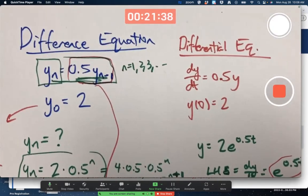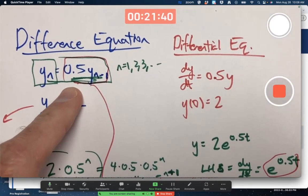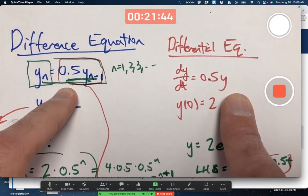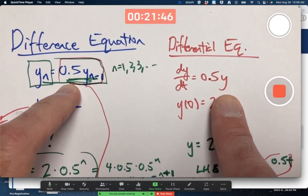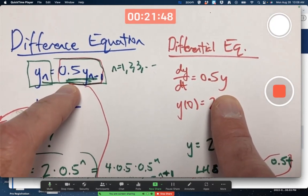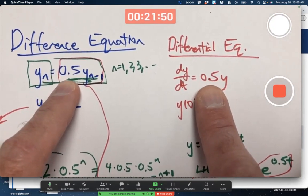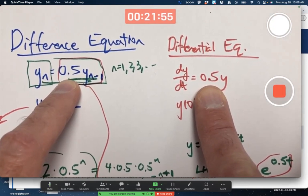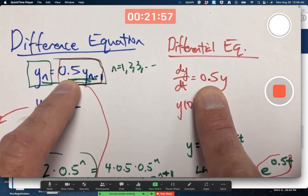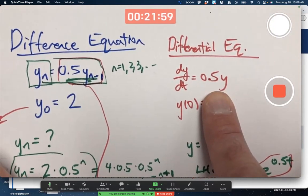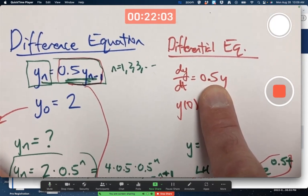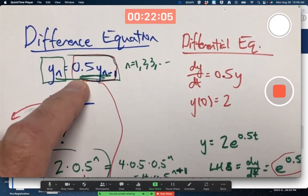Does it always happen that this one might be exponential decay and that one's exponential growth or maybe vice versa? No, there are situations very similar to these where they can both be exponential growth. For example, if I had a 2 there instead of a 0.5 in both cases, it would be exponential growth in both cases. When is this one ever exponential decay? When the coefficient is negative. Does that mean this one's exponential decay when the coefficient is negative? Not necessarily.